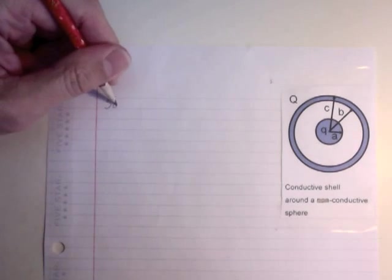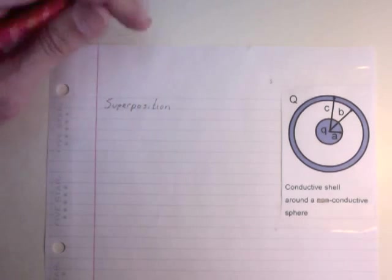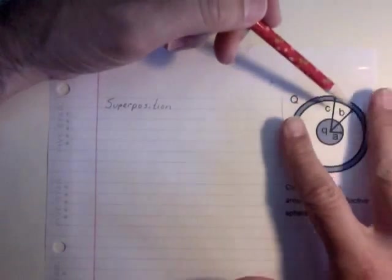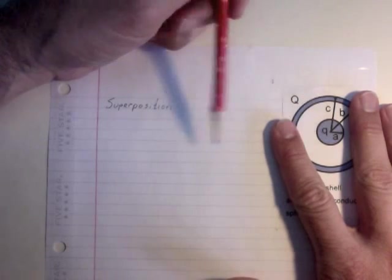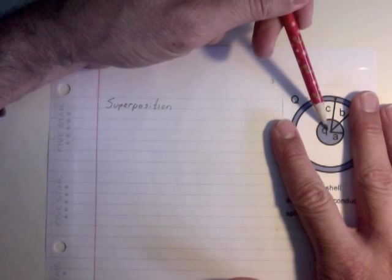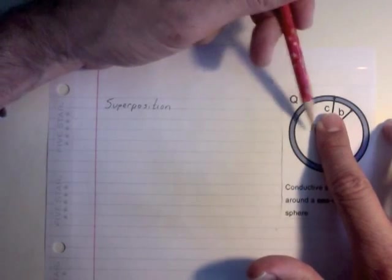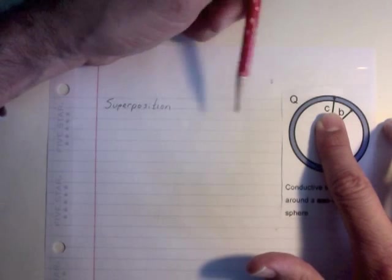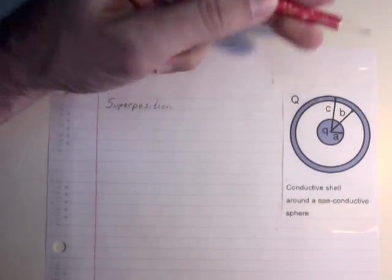Now we're going to do it with superposition. And here's the problem with superposition. Ordinarily, I'd look at this and I'd say, I'll ignore the shell and I'll figure out what the voltage is at any of those regions by just thinking about that inner sphere. Then, I'll block that out, and I'll think of what the potential is at any of those regions just due to the shell. Then, I'd add them together. The problem is this.